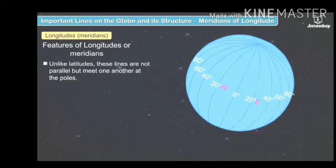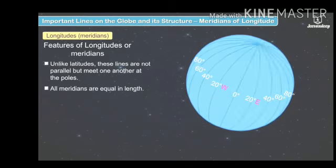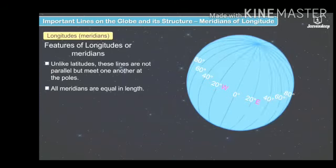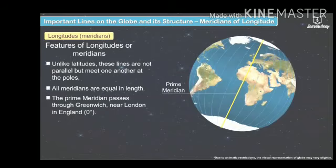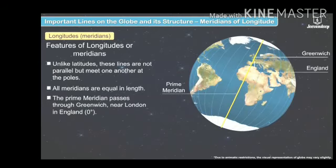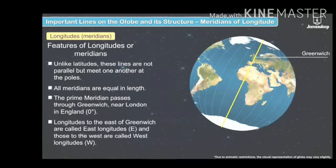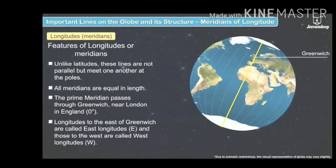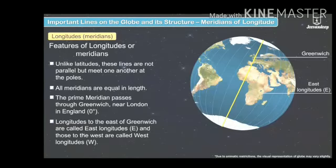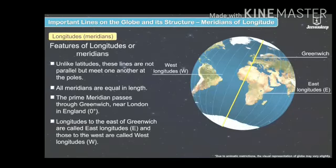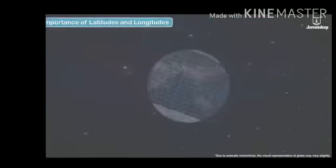Longitudes are not parallel like latitudes. They meet one another at the poles — at the North Pole and the South Pole. All longitudes are equal in length. The Prime Meridian passes through Greenwich, which is in London, England, and is at zero degrees. Longitudes to the east of Greenwich are called East Longitudes, and those to the west are called West Longitudes.